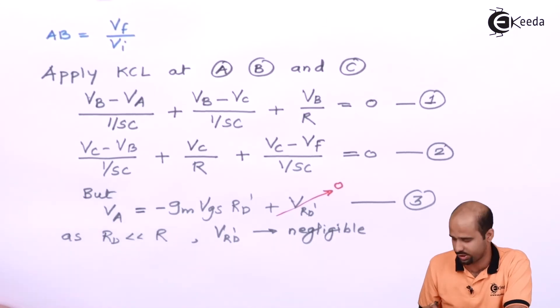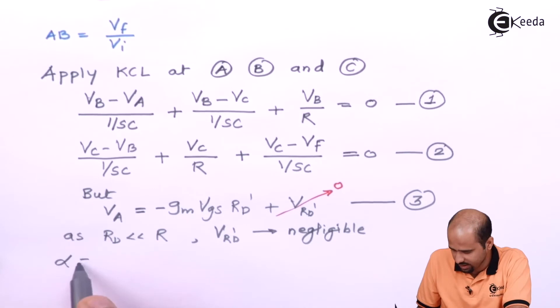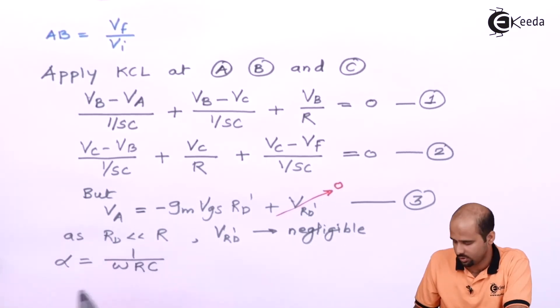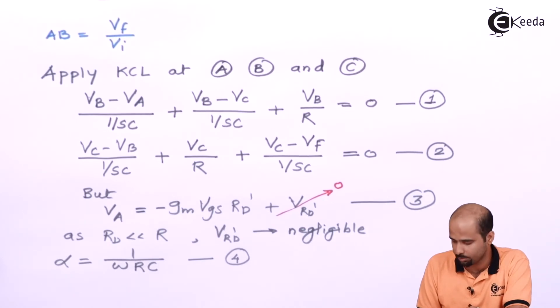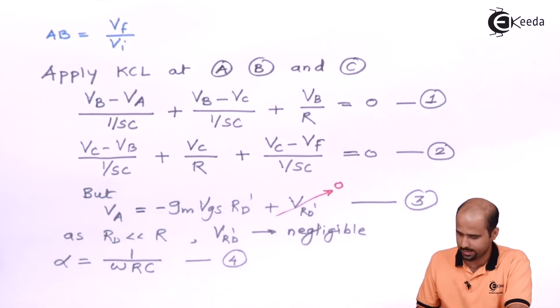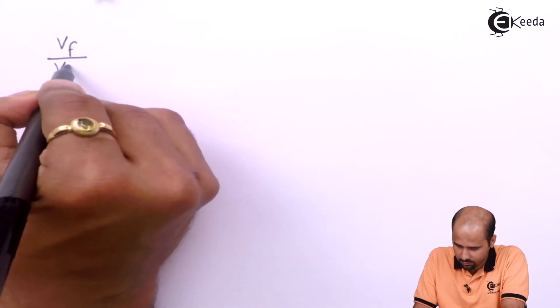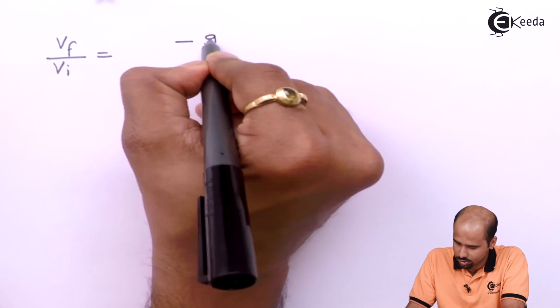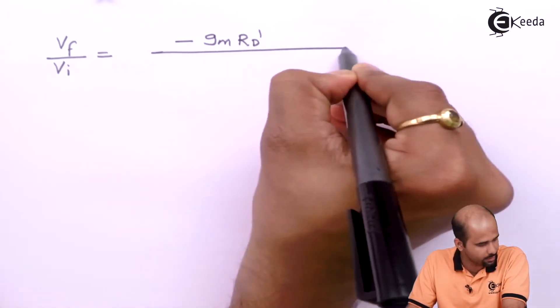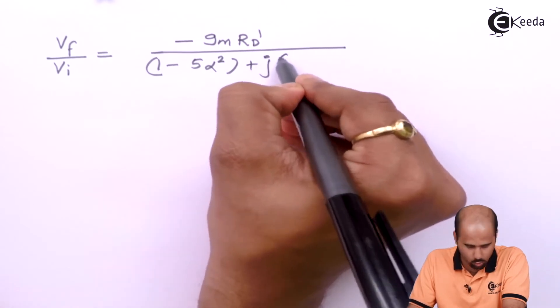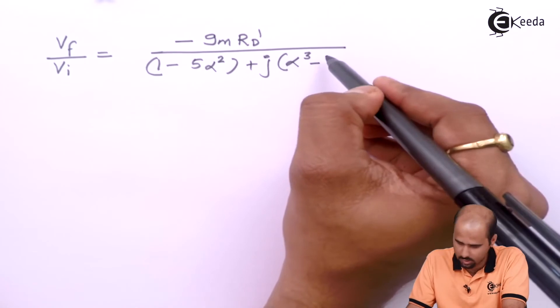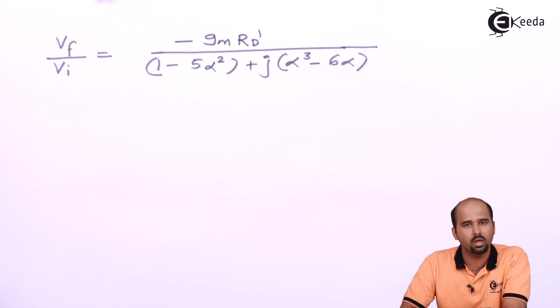With these three equations, I am considering alpha equal to 1 upon (omega × RC). With this value and these three equations, this is the fourth equation. By putting equation number 4 into all three equations I will be getting VF divided by VI. Whatever VI I am getting is nothing but VA only. So VF divided by VI equals minus GM·RD-dash, divided by [1 minus 5·alpha-squared + j(alpha-cubed minus 6·alpha)].